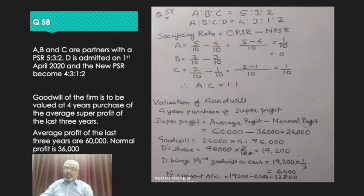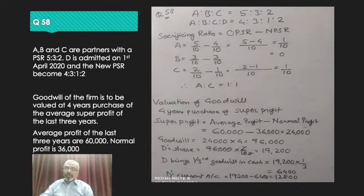Now let us move on to the next part of the question where we will talk about the valuation of goodwill. The goodwill of the firm is to be valued at 4 years purchase of the average super profit of the last 3 years. Whenever we are given this concept of super profit, we use the formula: average profit minus normal profit. In this question both are given to us directly, so we will directly do the calculation.